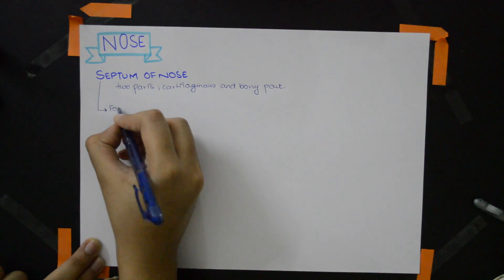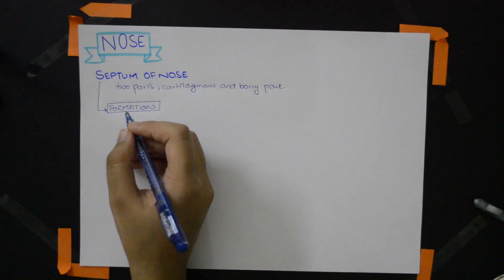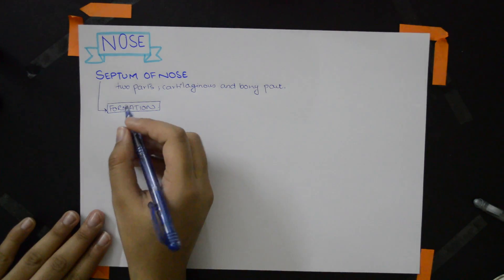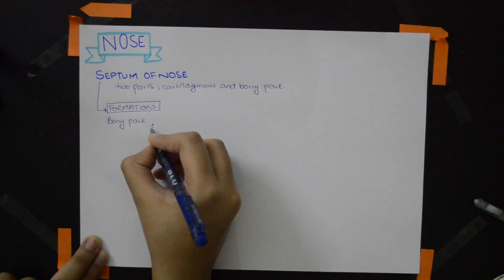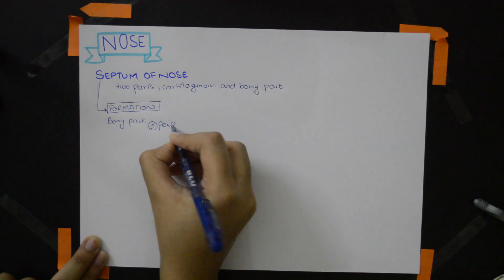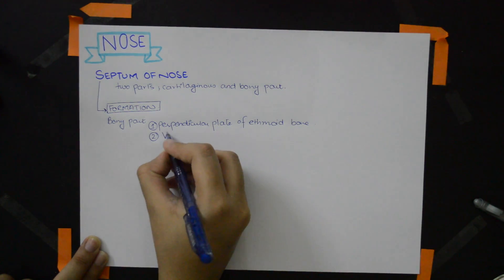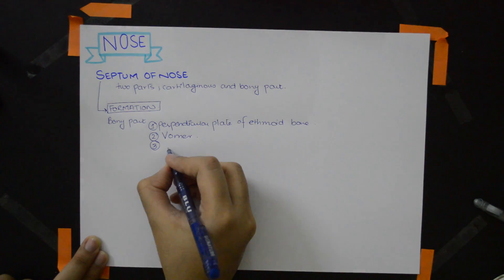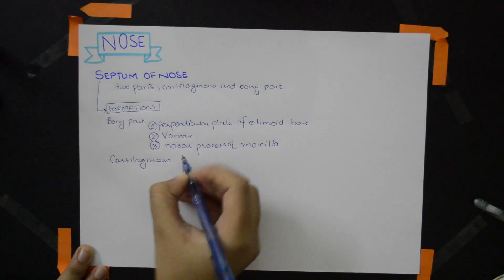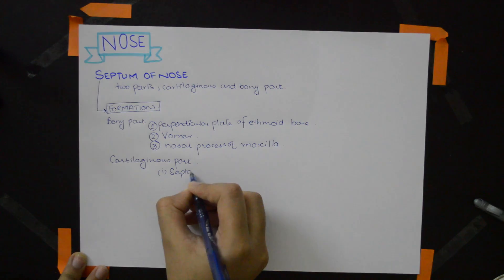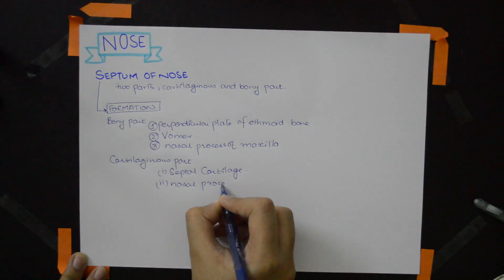Now what makes the septum? We're talking about what bones are making up the septum. The bony part has firstly the perpendicular blade of ethmoid bone, then the vomer, and third the nasal process of maxilla. The cartilaginous part has the septal cartilage and then the nasal process of the inferior nasal cartilage.